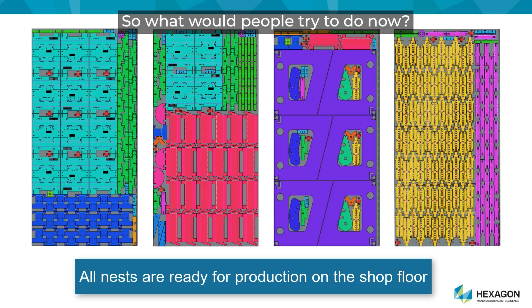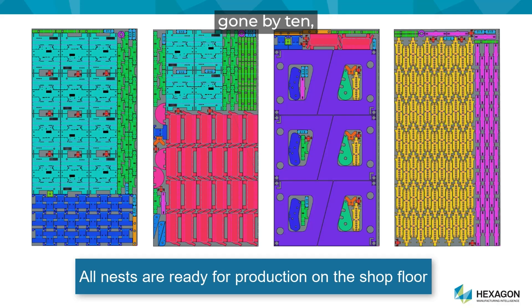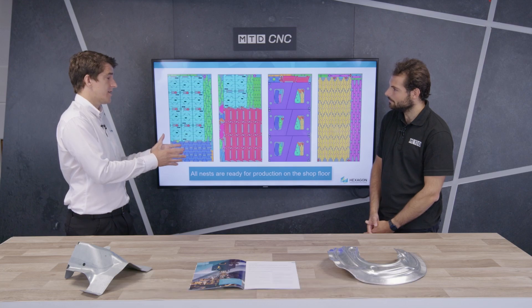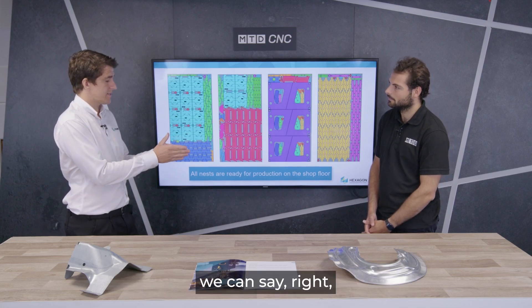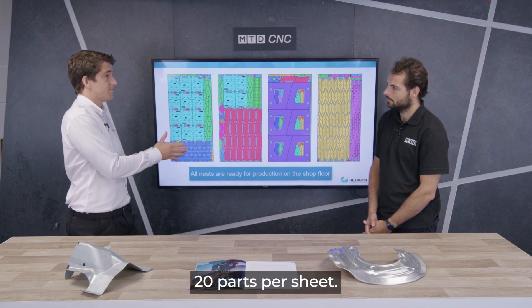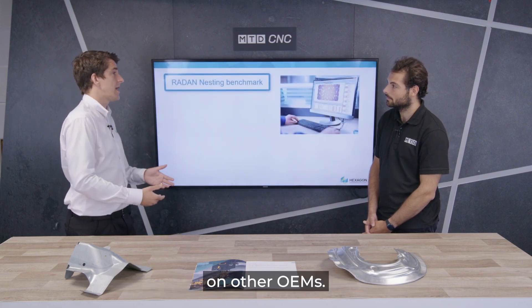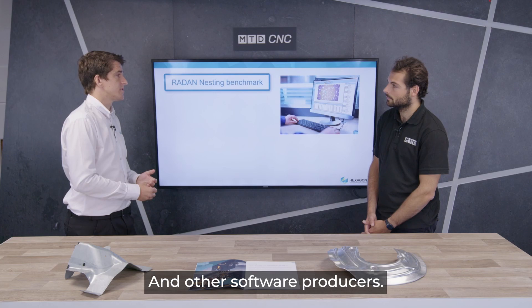So what people are trying to do now, they're trying to cram as many parts as they can onto that sheet as humanly possible. Now in softwares gone by 10-15 years ago you only got 10-15 parts on a sheet. Now with the Radan algorithm we can say we're gonna get 15-20 parts per sheet. So we're looking typically at a 10% increase on other OEMs and other software producers. And that's absolutely huge.